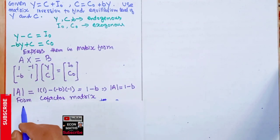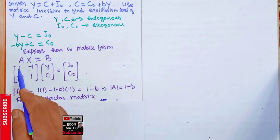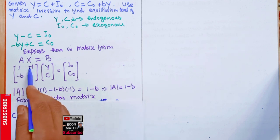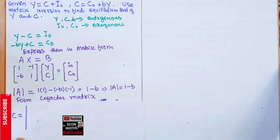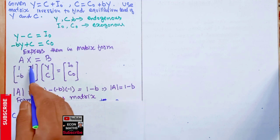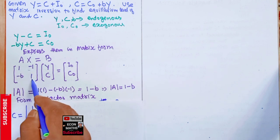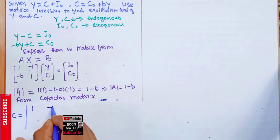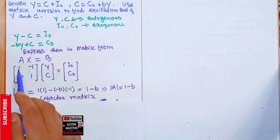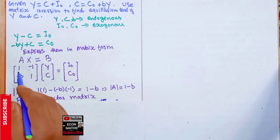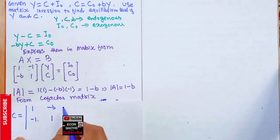We now form the cofactor matrix by replacing every element with its cofactor. To find the cofactor of each element, we mentally delete the row and column in which that element appears and take the determinant of the remaining elements. This gives us: 1, −b, −1, and 1 for positions a₁₁, a₁₂, a₂₁, and a₂₂ respectively.